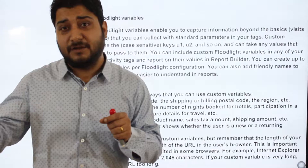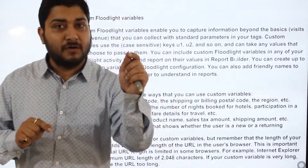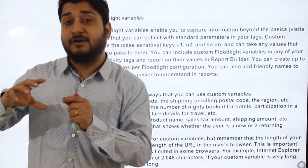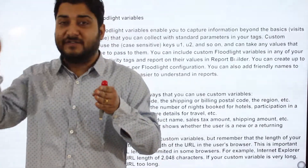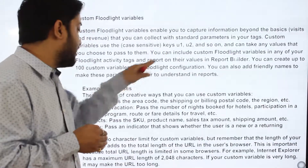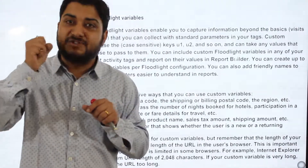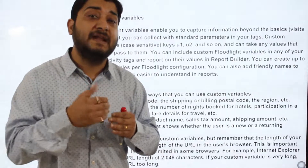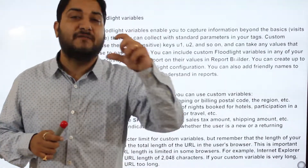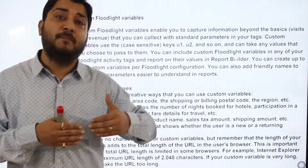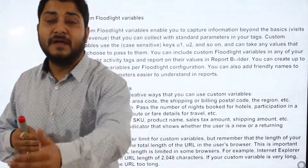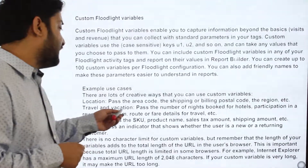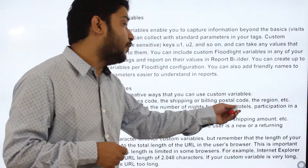The complete user journey goes from seeing the ad, clicking on it, going to the product, selecting it, making the purchase, and landing on the thank-you page. The floodlight variable u1 with the location parameter will capture the user's location from the billing or shipping address filled during checkout. By this, you can segregate users who bought from Maharashtra, Bihar, or Delhi.